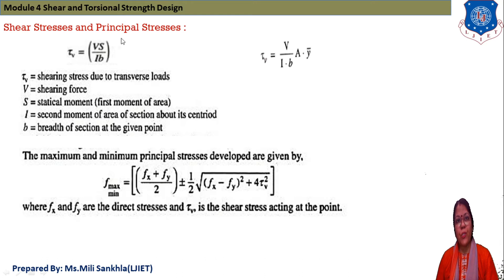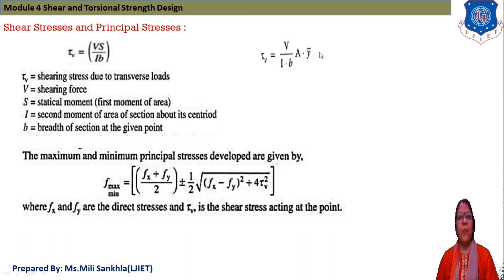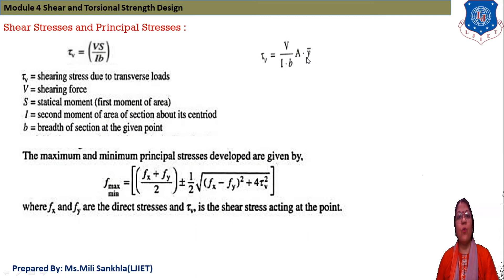The equations cover shear stress and principal stresses. The shear stress equation is: tau_v equals VQ divided by Ib, which can also be written as tau_v equals V divided by Ib times A·ȳ. Here, V is shear force, S (or A·ȳ) is the first moment of area, I is the second moment of inertia, and b is the width of the section.